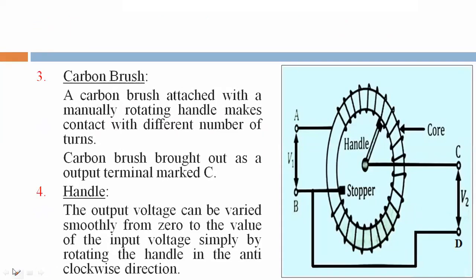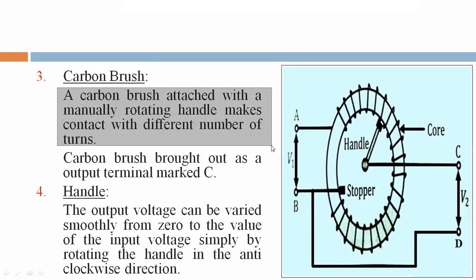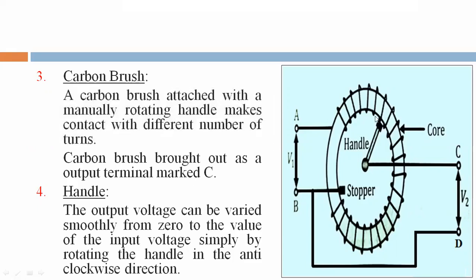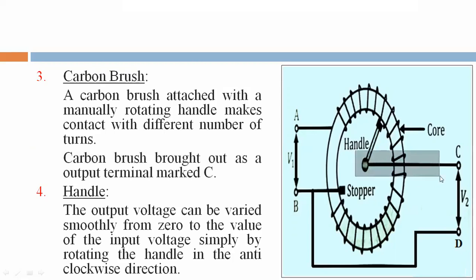Now we are seeing the third point: on the core, a carbon brush attached with a manually rotating handle makes contact with a different number of turns. The fourth point: an output terminal is marked as C. We can see this portion — the output terminal C on the winding.